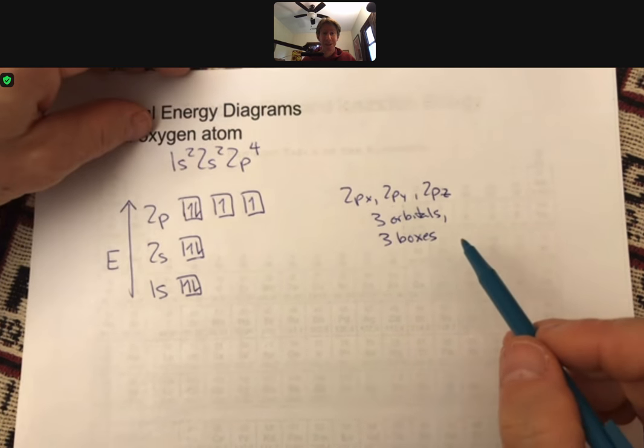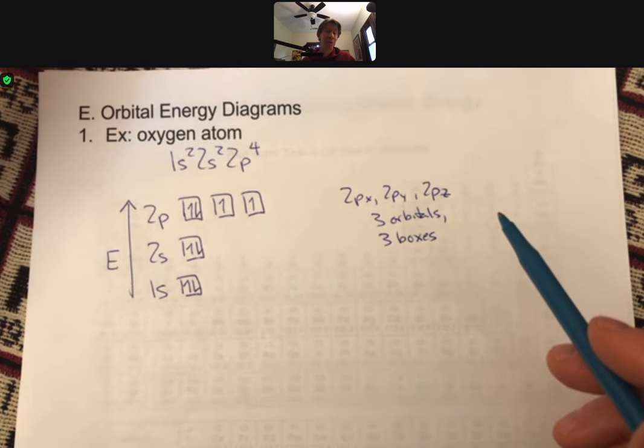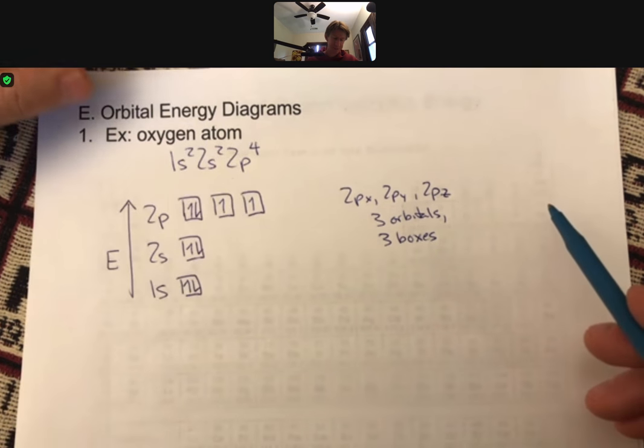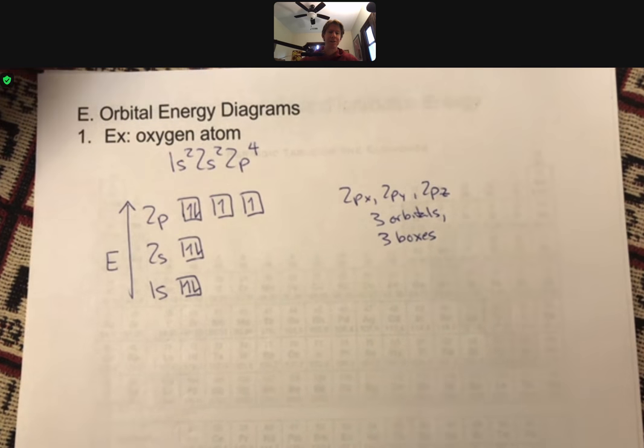And at some point there will be differences that we'll see, but there are certainly no differences now. And even when we see differences, it'll be because we decide which axis is which. And that is your second orbital energy diagram.